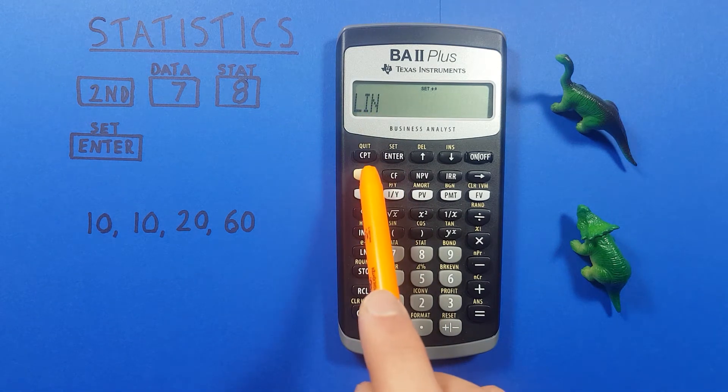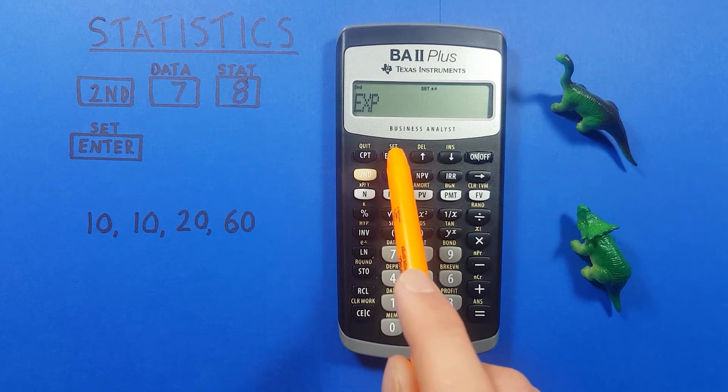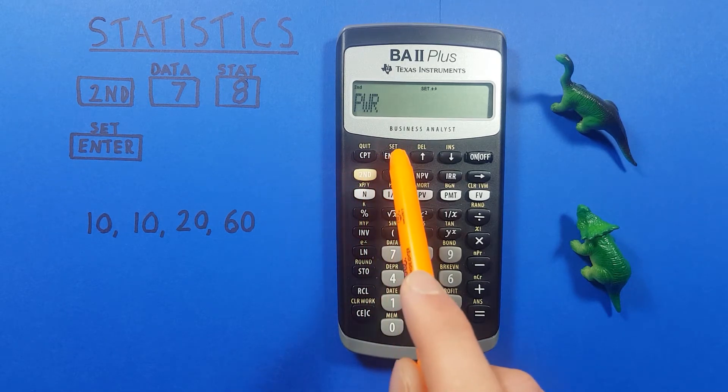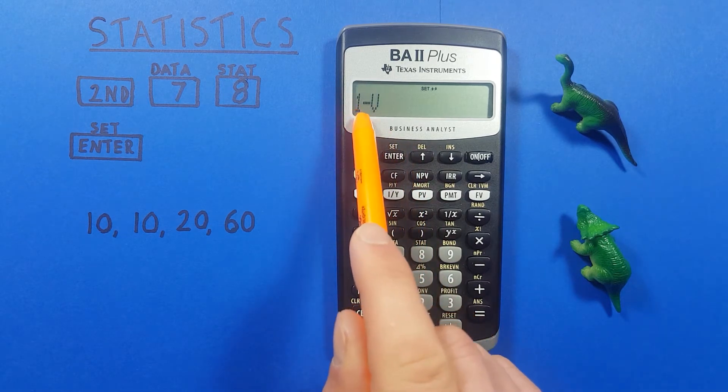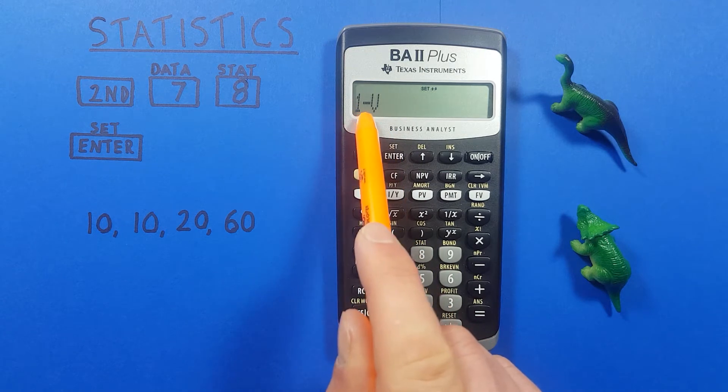So to do that we press second enter once, second enter twice, second enter three times, and four times until we get a one-v which lets us know we're set to one variable mode.